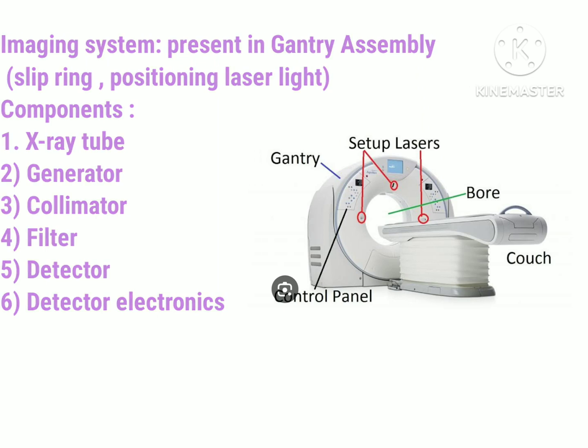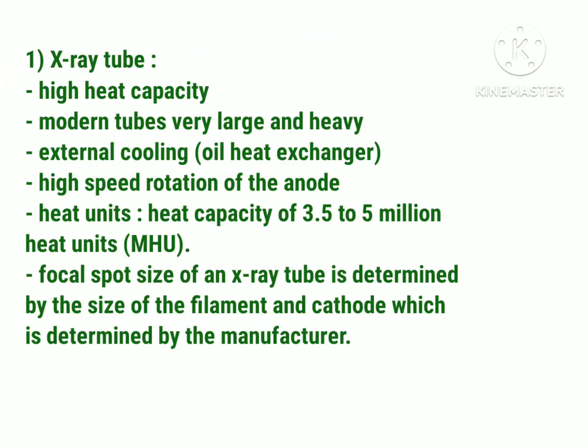The first component of the gantry is the x-ray tube from which x-rays are produced. The x-ray tube has a high heat capacity; it is made up of modern tubes which are very large and heavy. It has external cooling with an oil heat exchanger, and high speed rotation of the anode is present. Heat units are 3.5 to 5 million heat units. The focal spot size of the x-ray tube is determined by the size of the filament and cathode, which is determined by the manufacturer.